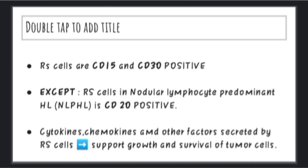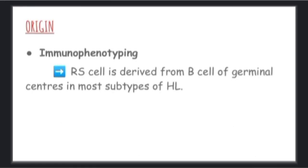RS cells are CD20 positive. RS cells secrete cytokines, chemokines, and other factors that support growth and survival of tumor cells. Now let's see the origin of RS cells. During immunophenotyping of RS cells, we see that the RS cell is derived from